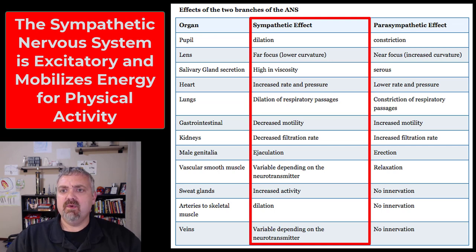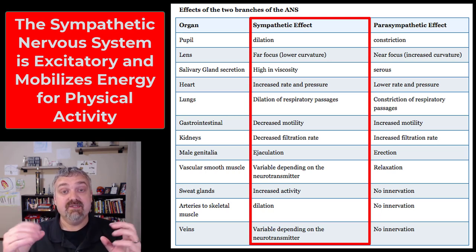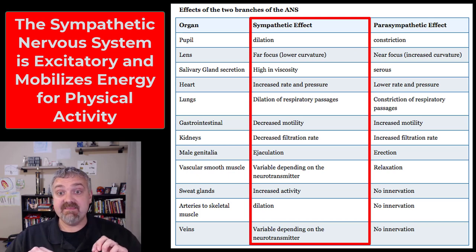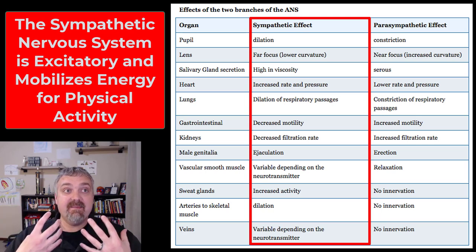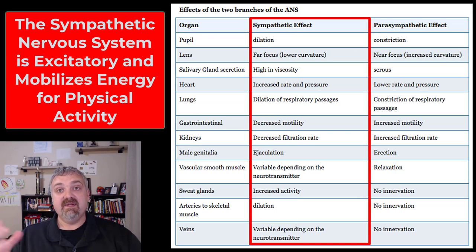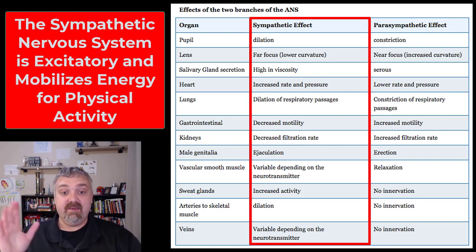Looking at the effects of the two halves of the ANS: the sympathetic system is all about preparing for physical activity. Your pupils are dilating so you can see more. Your lenses are focusing in the distance — where's that predator coming from? Saliva gets very thick and dry; when you're stressed, your mouth gets dry because you're producing sticky saliva to avoid losing fluid. Your heart and lungs prepare for activity, while your GI tract and kidneys shut down. You're not worried about digesting food right now — you're worried about not becoming food.